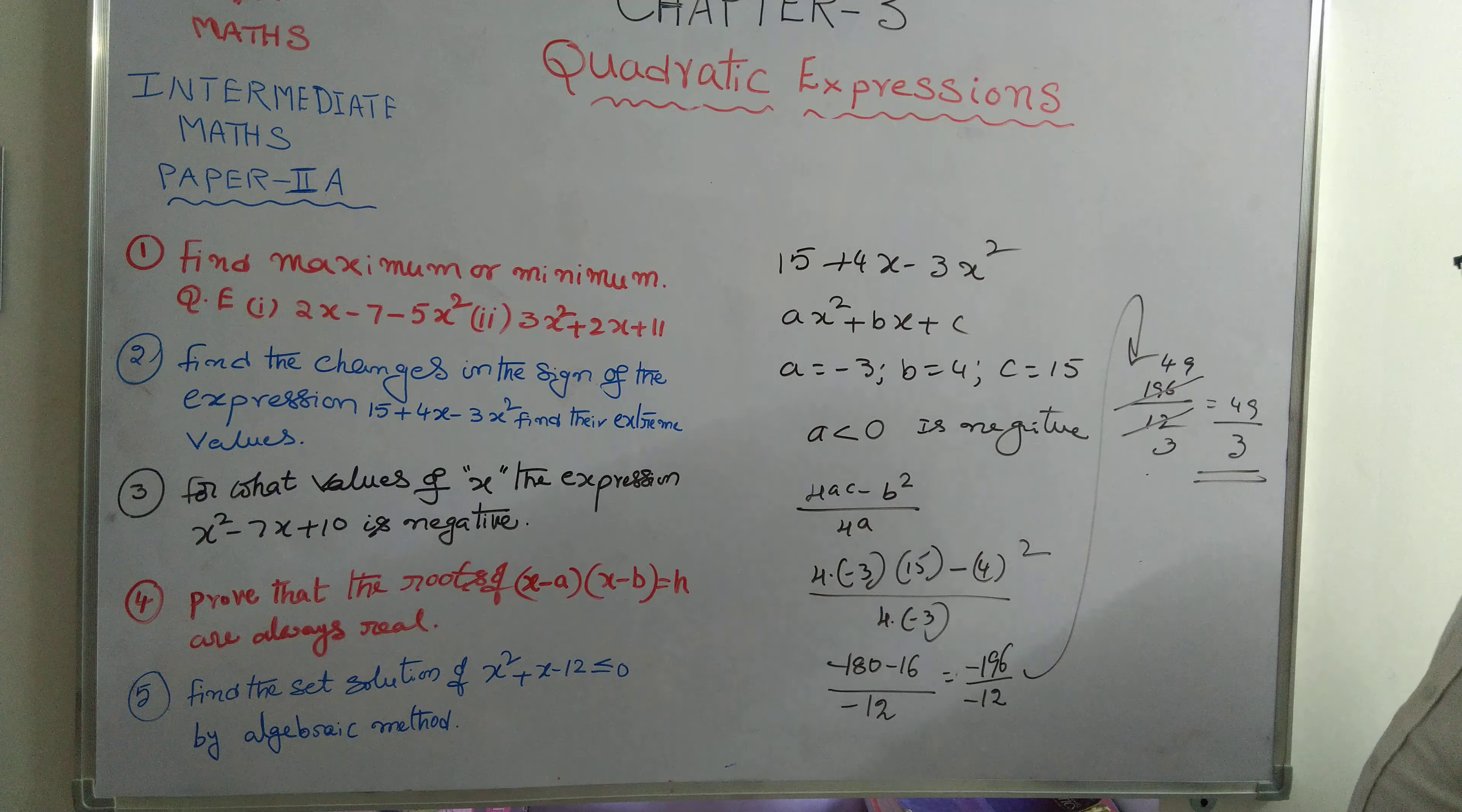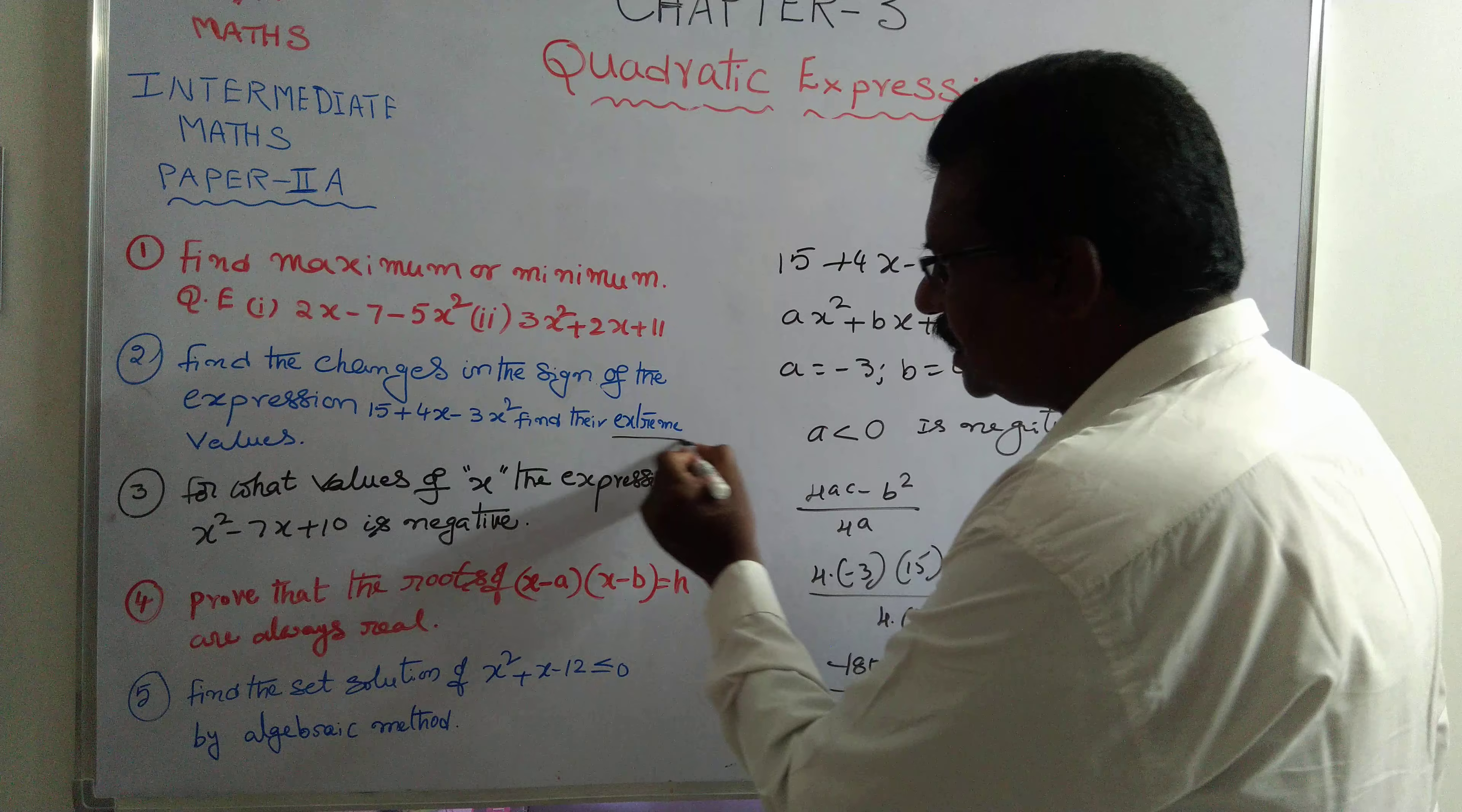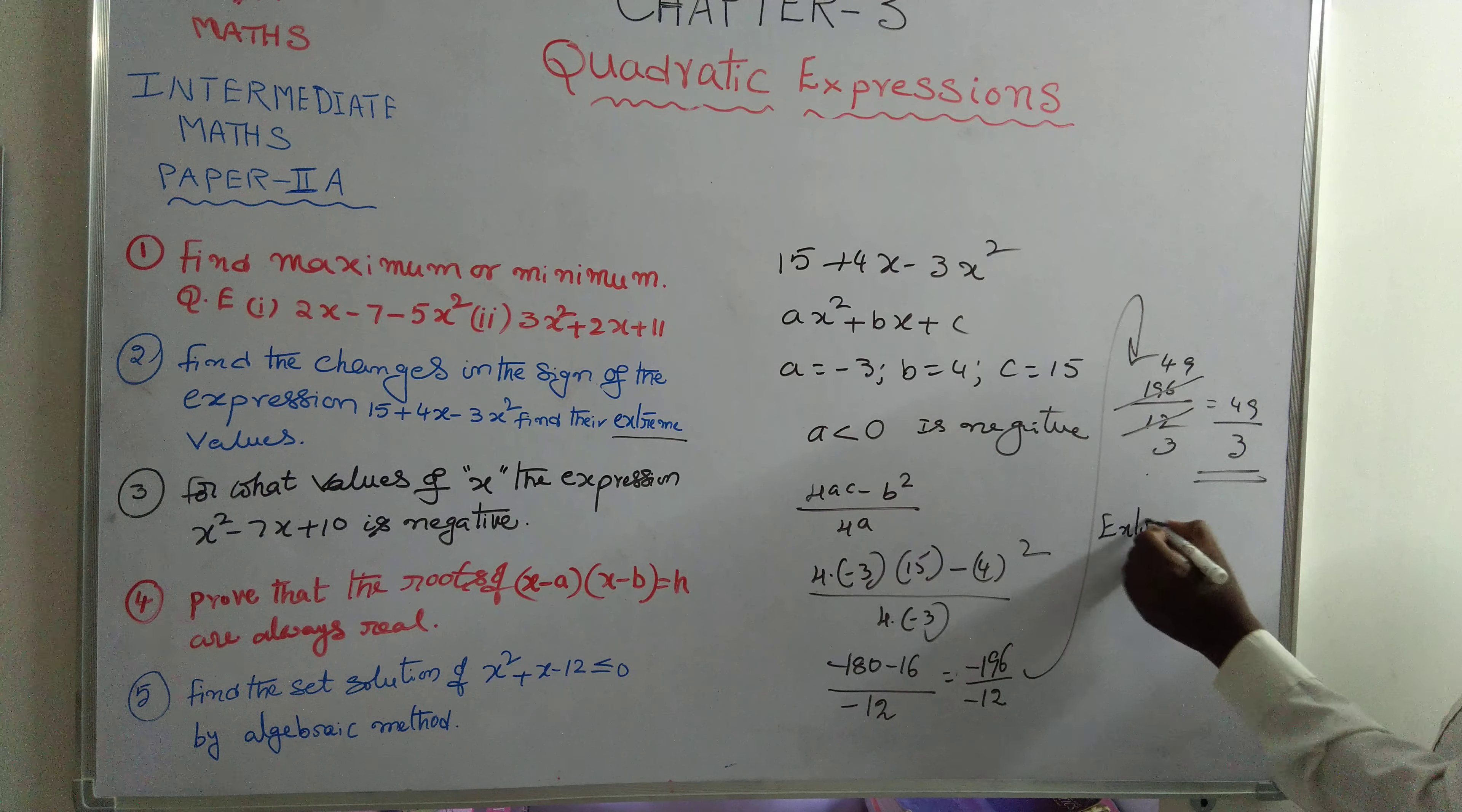This is the value. What is this one? a is less than 0 maximum value. This is called also the extreme value.